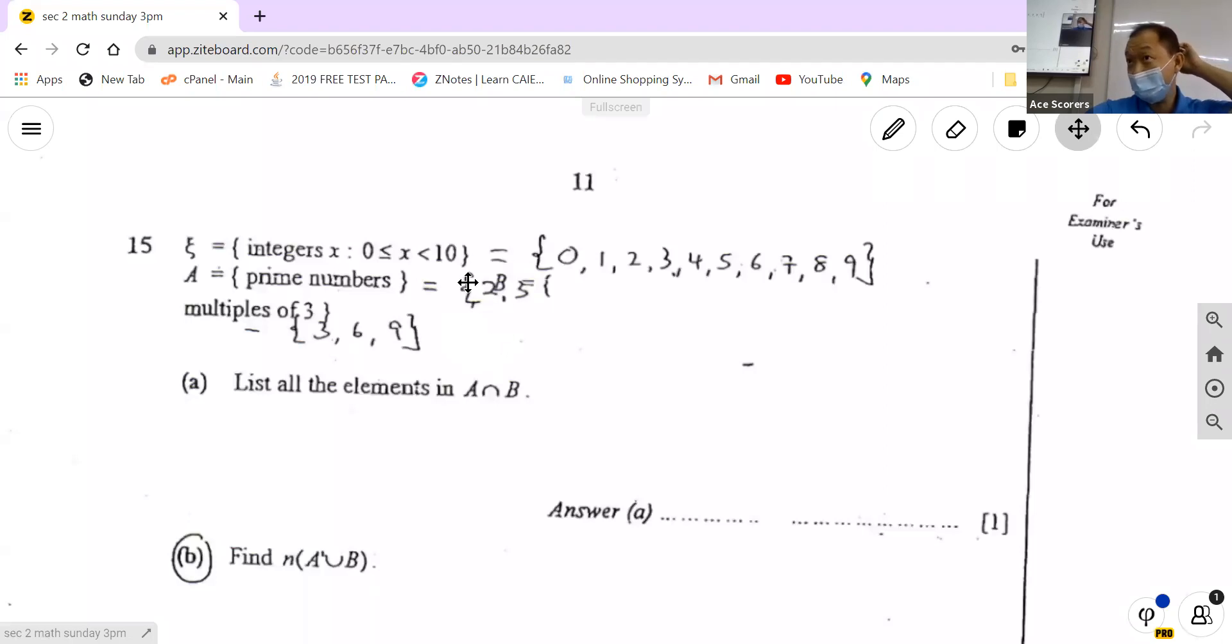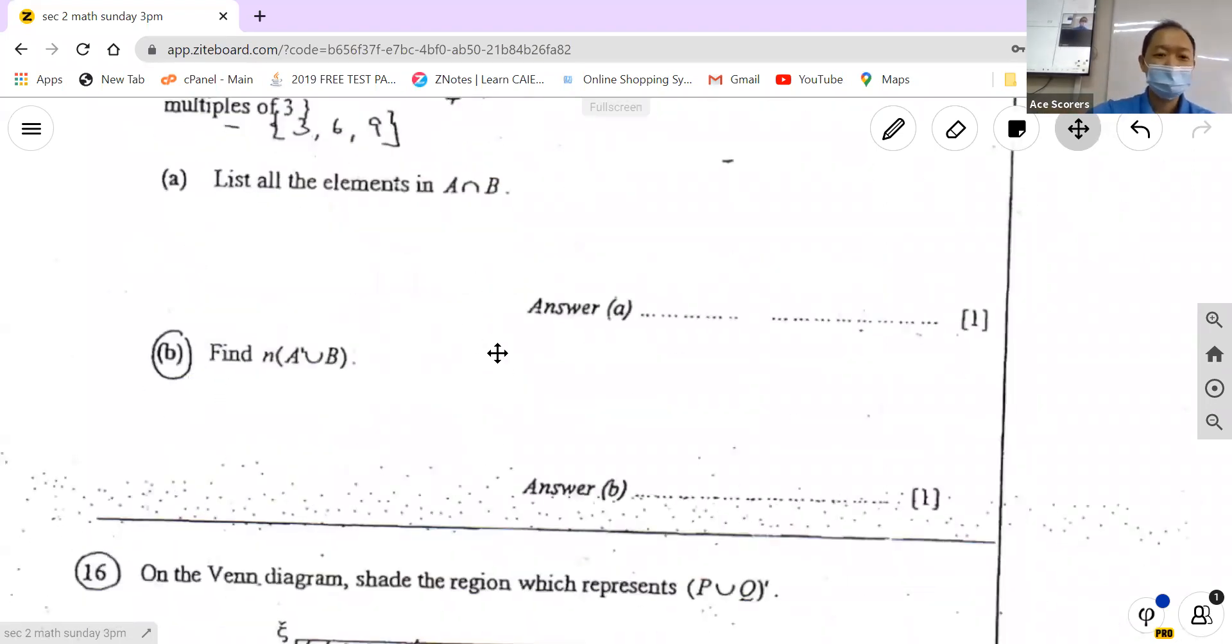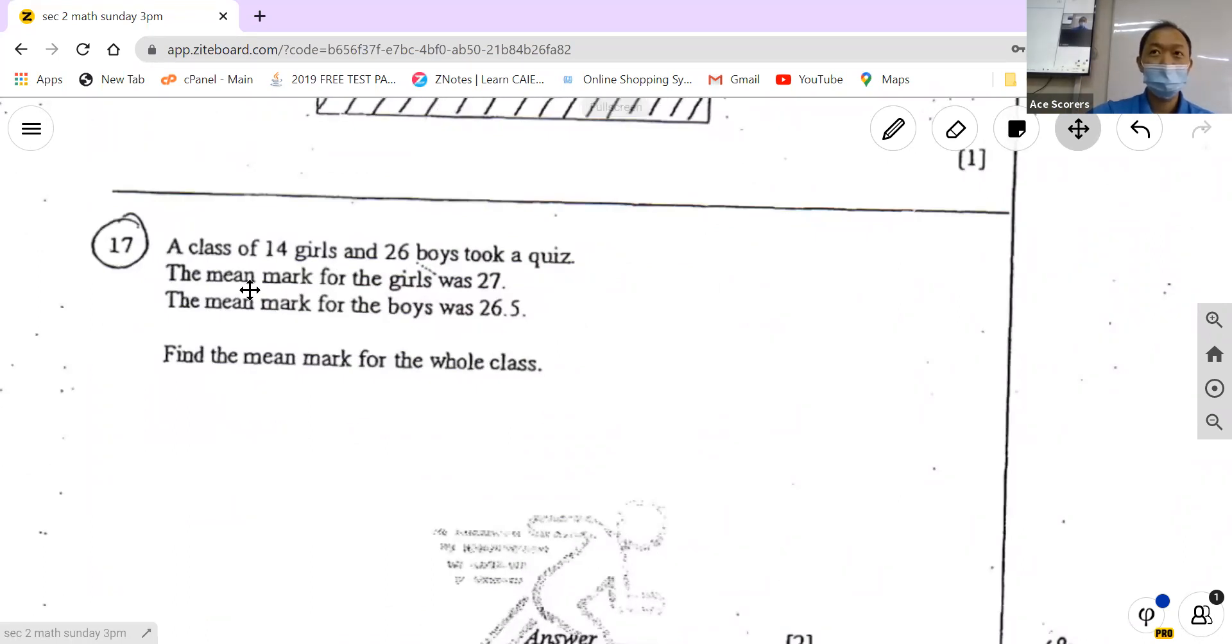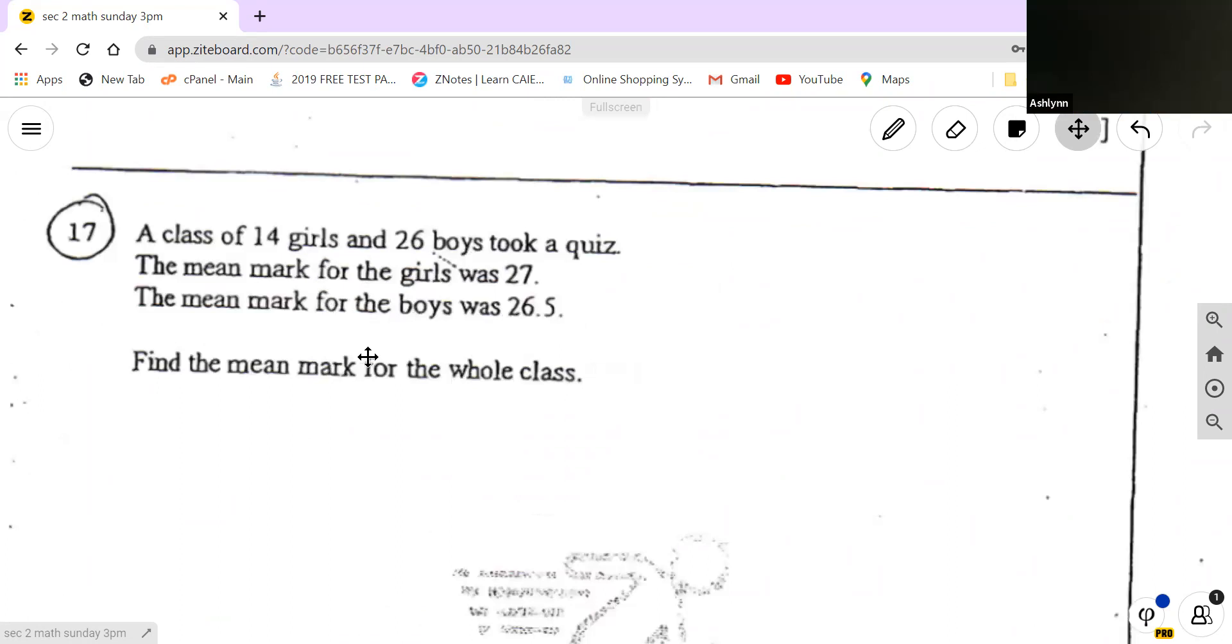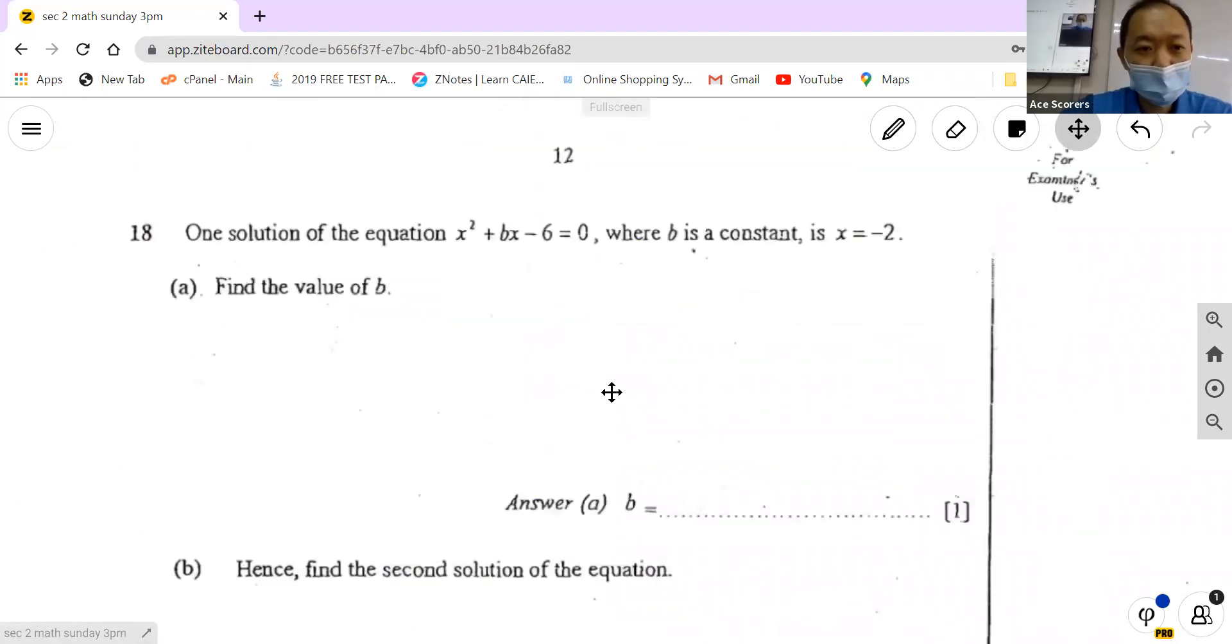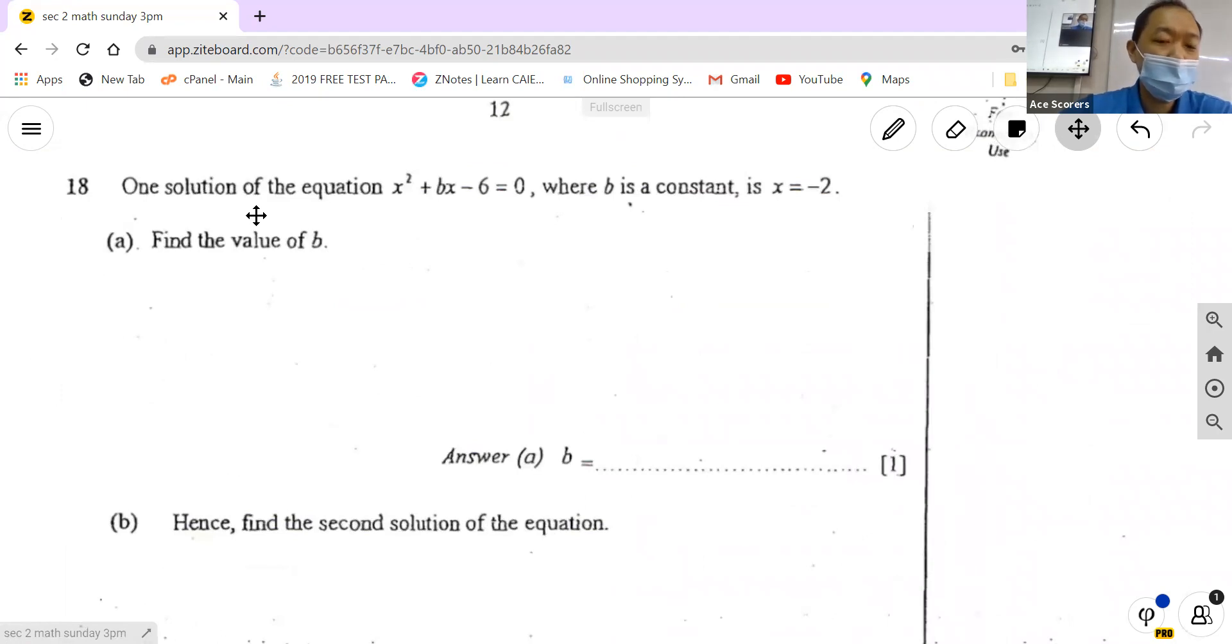Have you learned mean? This stuff. Mean, you know what's the meaning of mean? Mean means average. Do we want to do this? It's under the chapter. This is a different test. One solution of the equation is x equals negative 2. Find the value of b. How to do it? Substitute x inside. Let's just put the x inside which is negative 2.